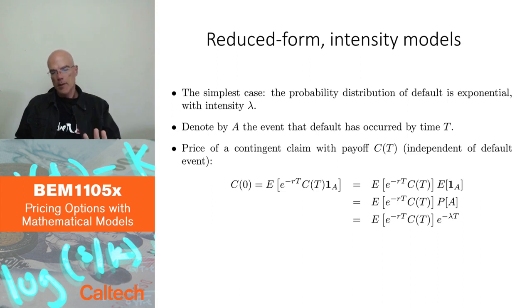But here I'm keeping it simple. Only one company. I don't have to model correlation of default between different companies. I'm just modeling defaults of one company. And even simpler, I'm just going to assume it's an exponentially distributed random variable, the time of default.